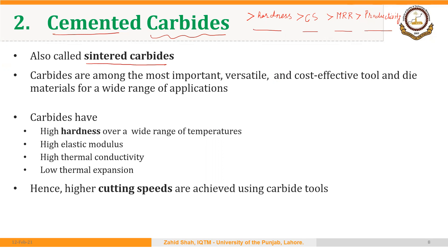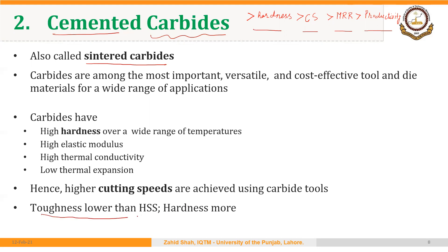In other words, we can remove more material and machine more parts in less time. Greater hardness helps to achieve a greater production rate. Carbides are actually harder than HSS, but their toughness is lower than HSS.